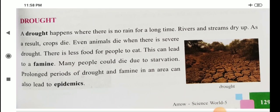A drought happens when there is no rain for a long time. Rivers and streams dry up. As a result, crops die. Even animals die when there is severe drought. There is less food for people to eat. This can lead to a famine. Many people could die due to starvation. Prolonged periods of drought and famine in an area can also lead to epidemic.